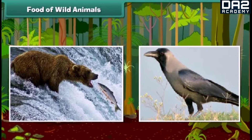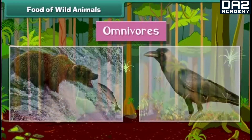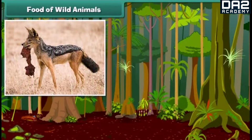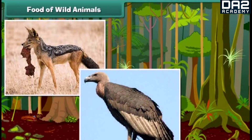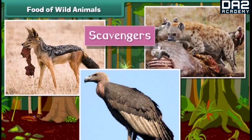Animals like bears and crows are called omnivorous animals, as they eat both plants and animals. Jackals, vultures, and hyenas are called scavengers — they eat the flesh of dead animals.